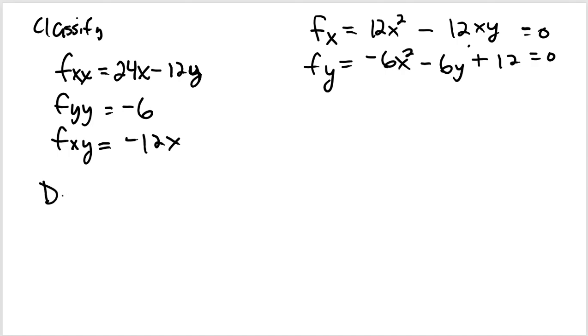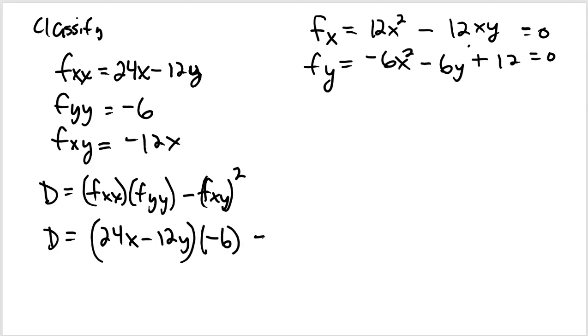We create a formula, give it the letter capital D, which is built off of these second partials. We take our double x, take our double y and multiply them together, and we subtract the mixed partial squared. This comes from a determinant of a matrix called the Hessian. And based on that determinant of that Hessian, we can tell whether we have a local min, local max, or a new critical point called a saddle point. Let's write the formula out. We have 24x - 12y, multiplied by -6, and we subtract (-12x)².